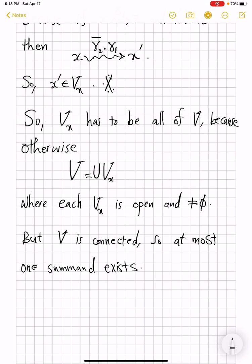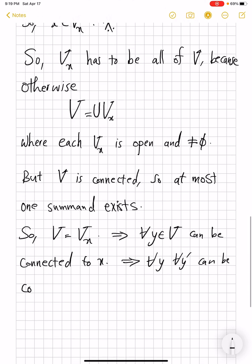And that means just one Vₓ covers all of your V, and by definition that means V is just equal to Vₓ. That means every Y in V can be connected to X. And that means every Y, every Y prime can be connected, which we have seen above how to achieve. You go from Y to X and then from X to Y prime.